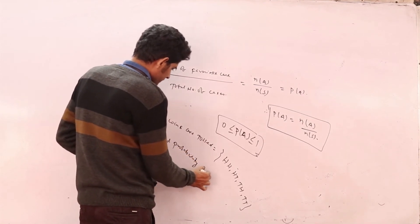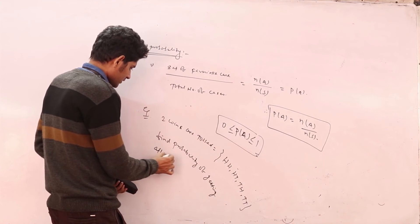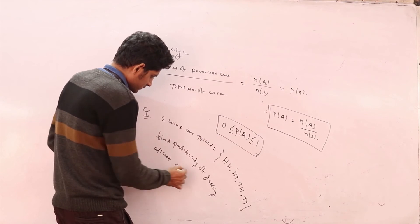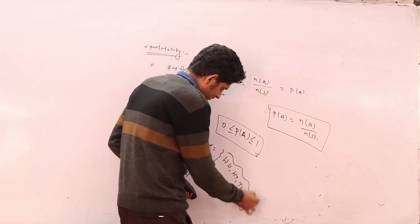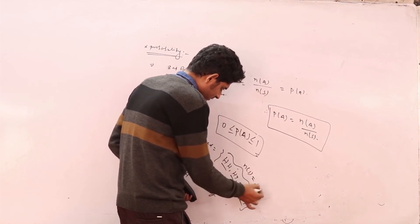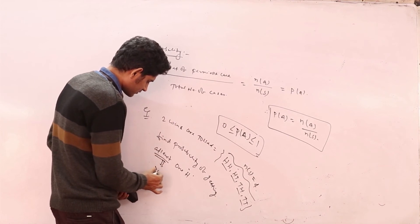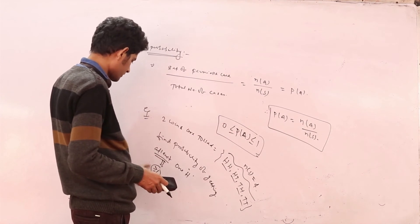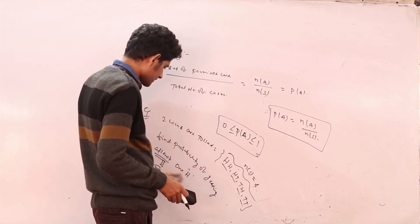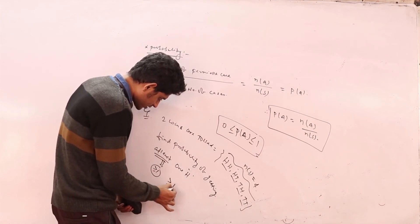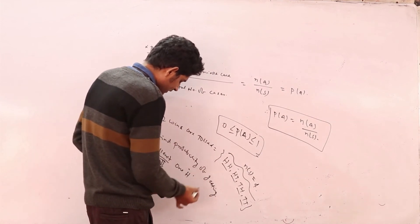Find the probability of getting at least one head. n(S) has four elements: one, two, three, four. At least means minimum — greater than or equal to. So at least one head means one head or more, i.e., greater than or equal to one head.